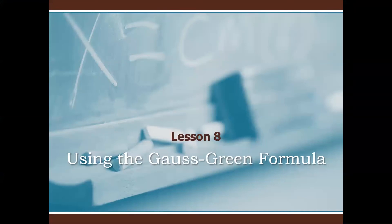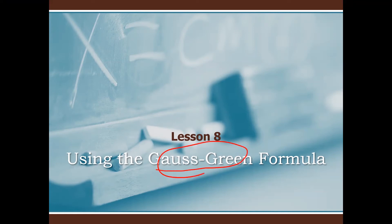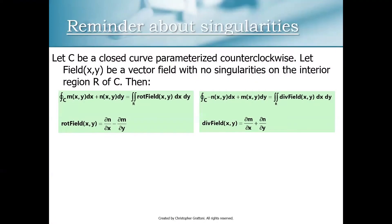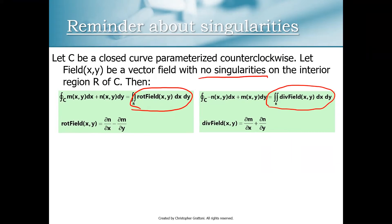Hi guys, thanks for tuning in to my second video. We're going to use the Gauss-Green formula to do some flow along and flow across calculations using double integrals. One quick caveat before we start: the Gauss-Green formula does require that the interior of our curve R does not contain any singularities, and the reason for that is as follows.